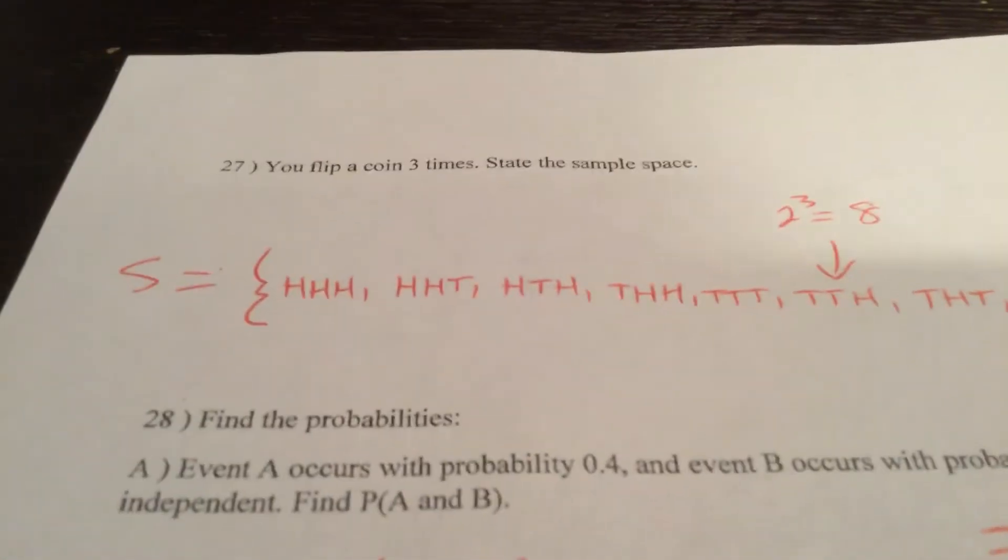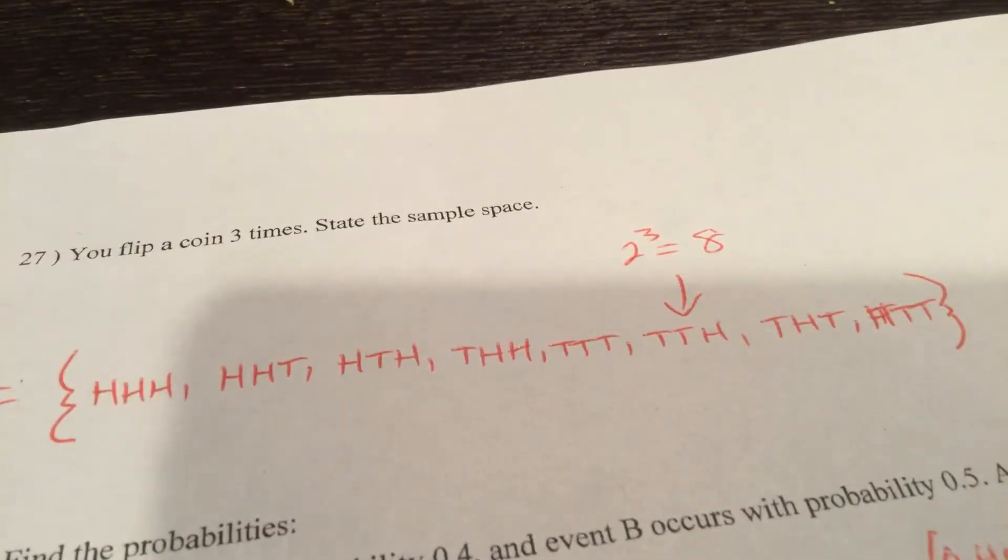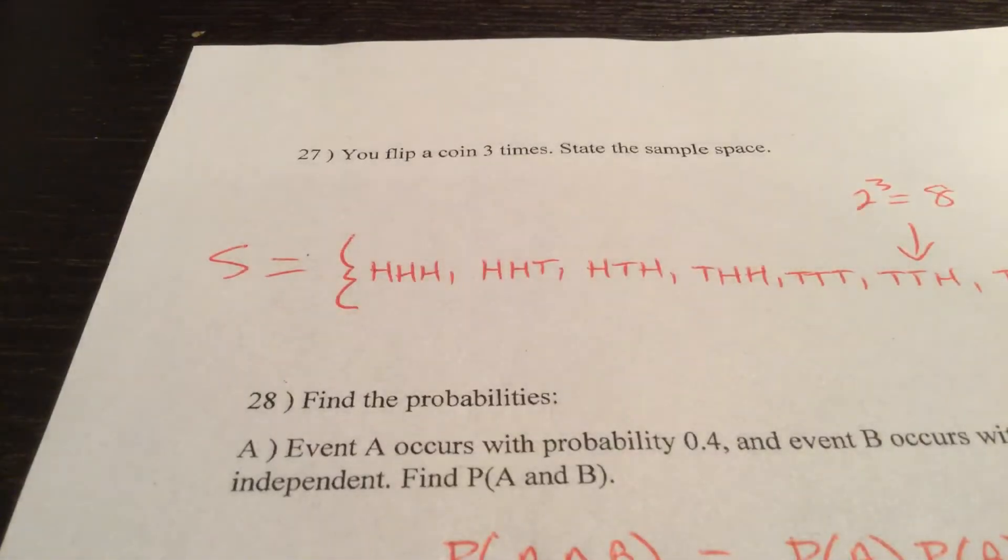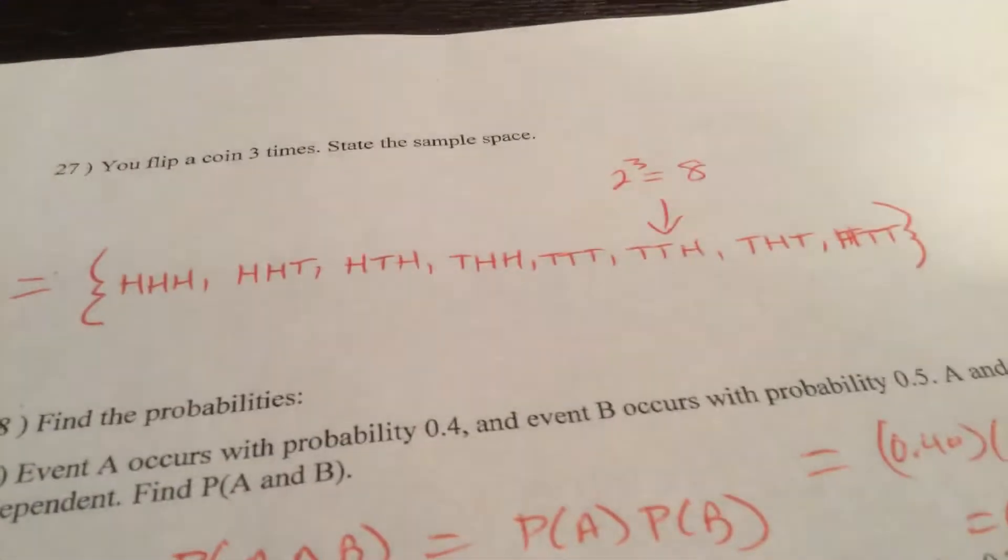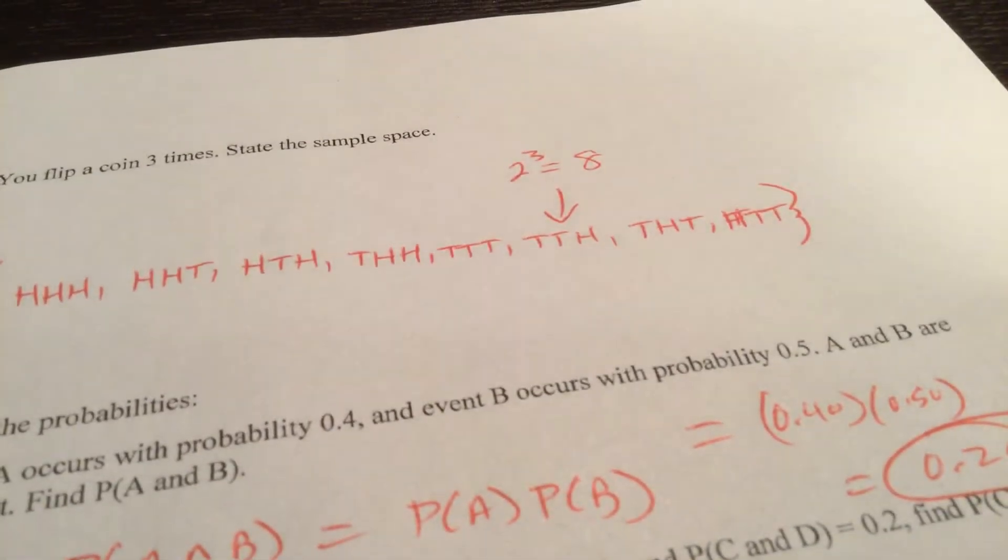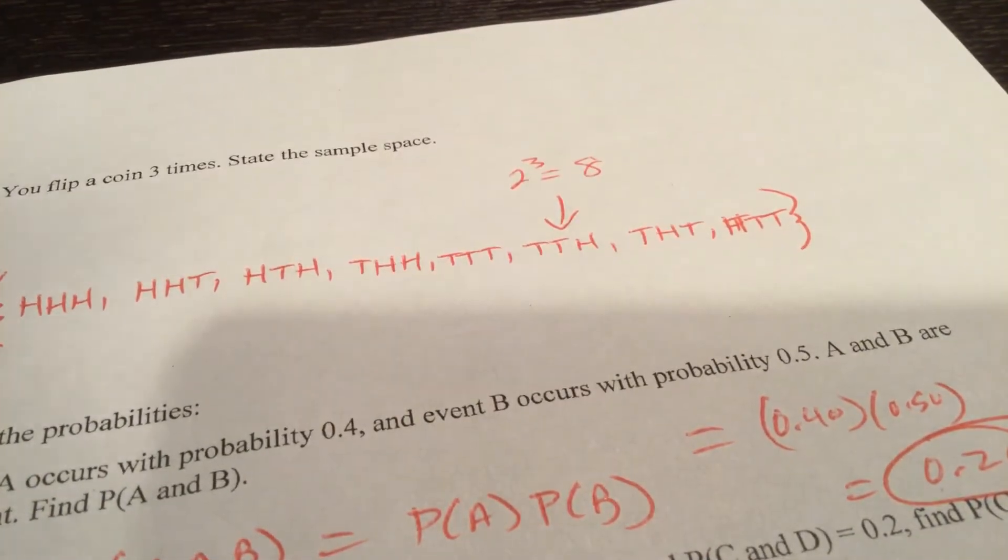And the last page for today. You flip a coin three times. State the sample space. You either get heads or tails. That's two choices. Raised to the third power. That means there's going to be eight total. I started with all the chances of three heads, then two heads, then three tails, then two tails. That is all of them. The order what you put in there doesn't matter. They need to be eight distinctly different outcomes there though.